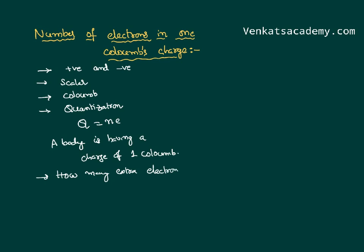Provided the charge is a negative charge, or if the body is positively charged, how many less electrons does it have compared with the positive charges? I will deal with it based on the quantization concept: Q equals ne. The charge is one coulomb and the charge of an electron is 1.6 into 10 power minus 19 coulombs.